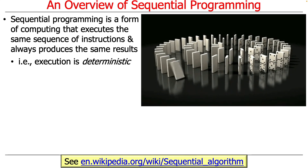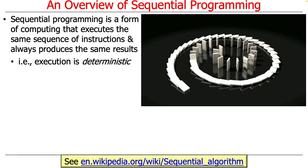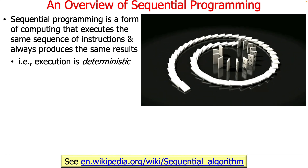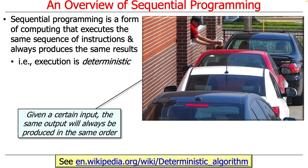I think you probably have a pretty good intuitive feel for this already. Sequential programming is a form of computing that executes the same sequence of instructions and always produces the same results. Another way of saying this is the execution sequence is deterministic — you always get the same results for the same input. Given a certain input, the same output will always be produced in the same order. A good example of sequential processing is a drive-through at a fast food restaurant where people go one at a time. The good part is you just sit in line and you're served when it's your turn. The bad part is if you have an order that could be done very quickly — like you want a diet soda — and the person in front of you is a minivan full of soccer kids who want special ordered stuff, then you're just going to have to sit there and wait.